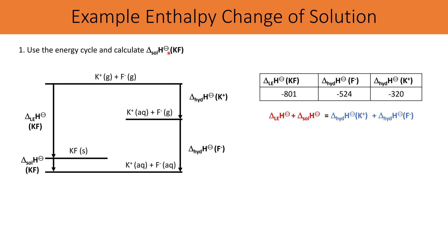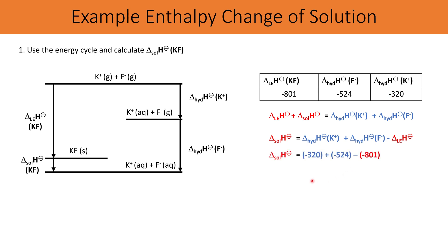Substituting the values — paying careful attention to signs — we get: (−320) + (−524) minus the lattice enthalpy, giving an enthalpy change of solution of −43 kJ mol⁻¹, which confirms this is an exothermic process for potassium fluoride.